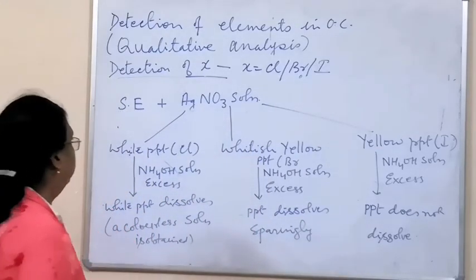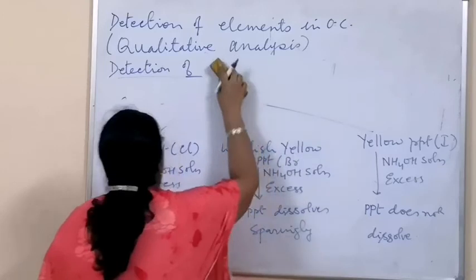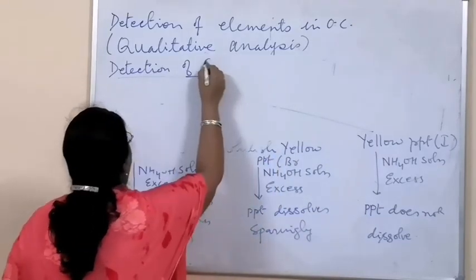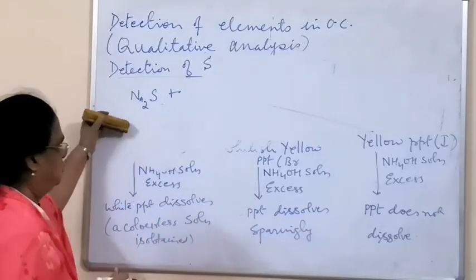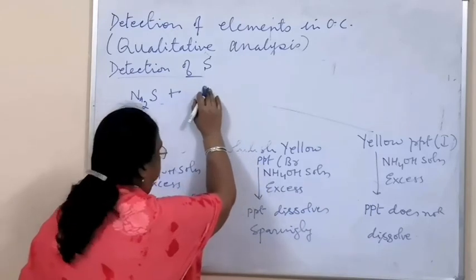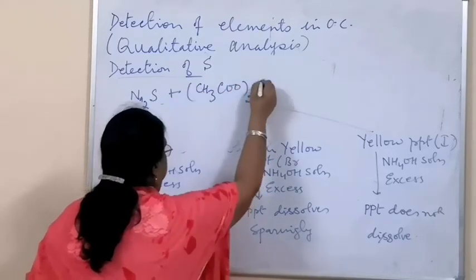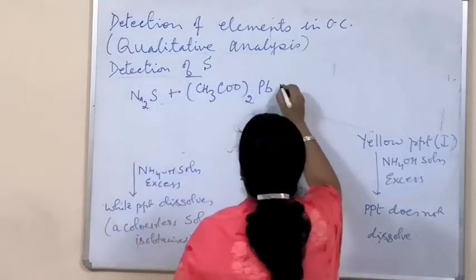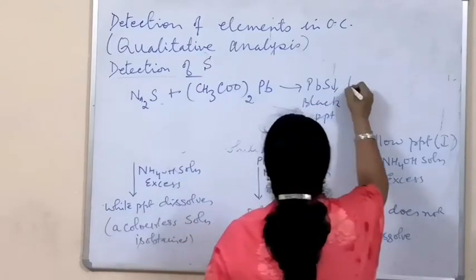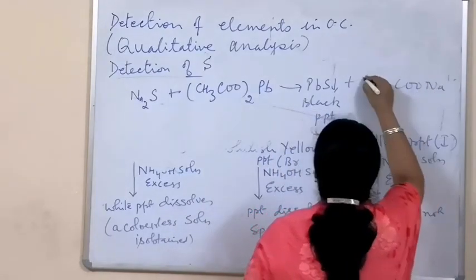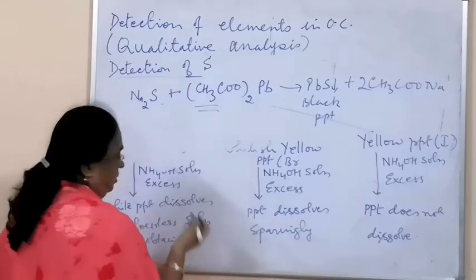There is also an additional test for sulfur: when Na2S is present in the Lassaigne's solution, you can use lead acetate instead of sodium nitroprusside. The reaction gives PbS — a black precipitate — and sodium acetate is also formed. Sulfur can therefore be tested by either sodium nitroprusside or lead acetate.